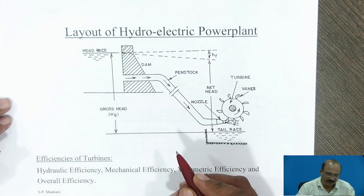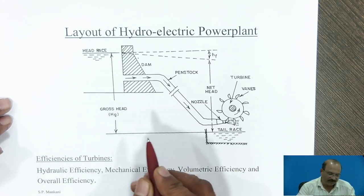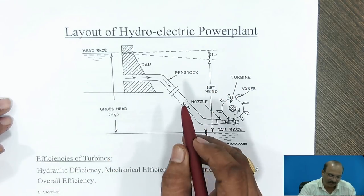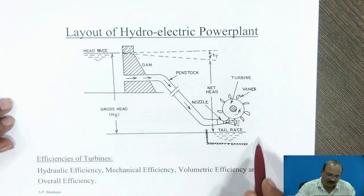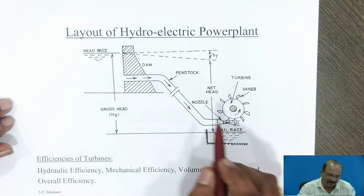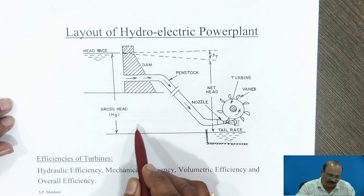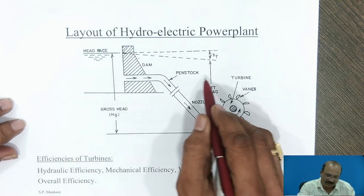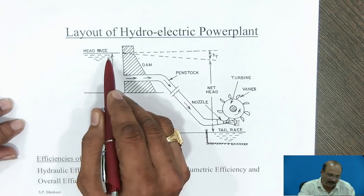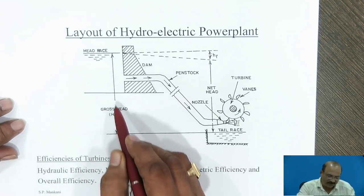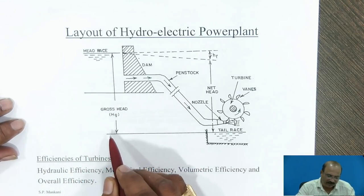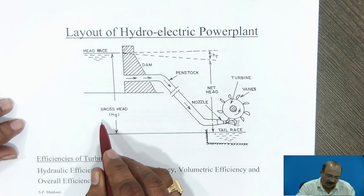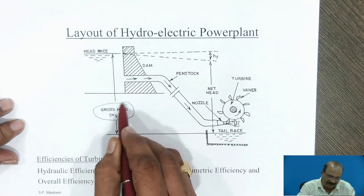Before going to the rest of the equations, we have to study a little bit about the layout of the hydroelectric power plant. This diagram indicates the total layout of the hydraulic power plant. This part is related with the water storage and this part is related with the turbine. This is the gross head available in the dam — from the tail race up to the head race. We are going to call this as gross head, HG.